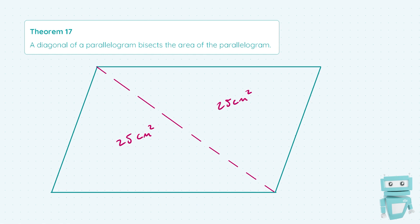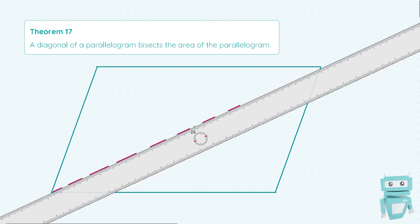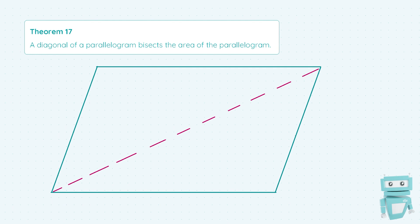And the same thing can be said for the other diagonal which runs from the bottom left corner to the top right corner. If once again our total area here is 50 centimeters squared, then each side of the dotted line is going to be 25 centimeters squared.